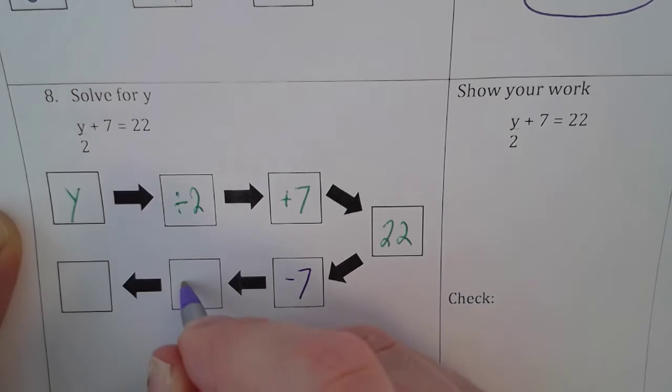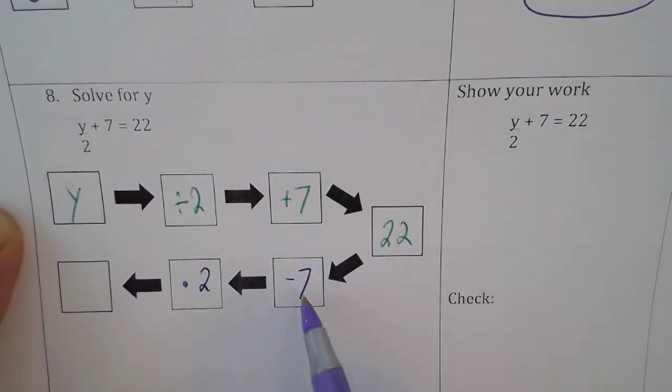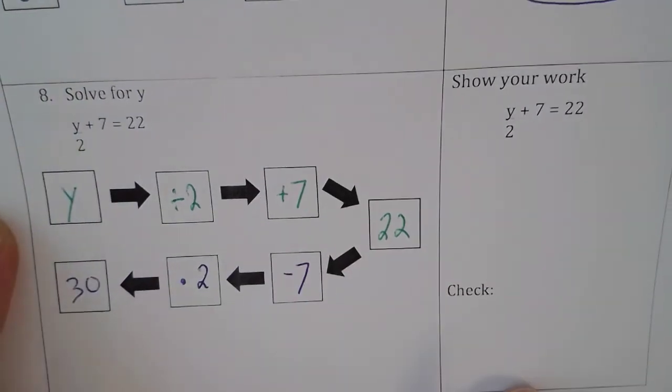And then the last step is to multiply by 2, because we undo what's being done. 22 minus 7 times 2. And if you were to use a calculator, you would find out that 22 minus 7 is 15, and 15 times 2 is 30. So our solution should be 30.